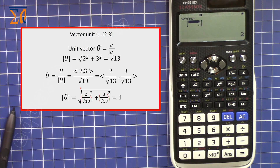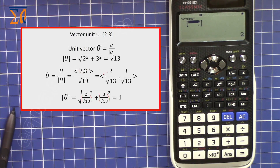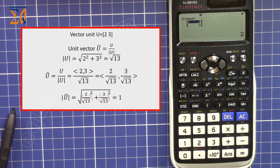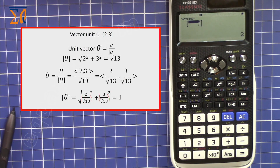So the unit vector components are the original values divided by the magnitude. The first value is 2 over square root of 13, and the second is 3 over square root of 13. To verify, check that (2/√13)² + (3/√13)² equals 1. This is our unit vector.